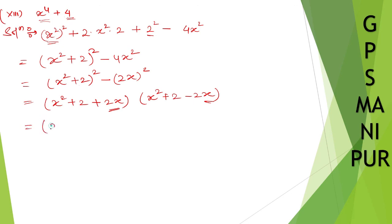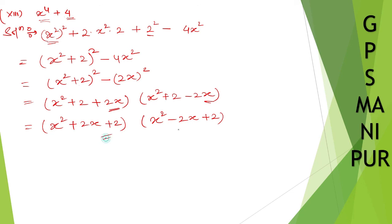So the answer is x square plus 2x plus 2, multiplied by x square minus 2x plus 2. I hope the answer is correct. Thank you so much, we will meet in the next video.